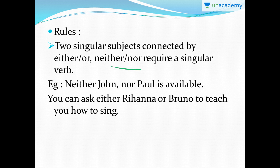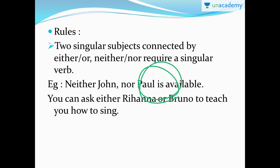For example: 'Neither John nor Paul is available.' So 'neither/nor' is there. John and Paul are two singular subjects — both are singular words. And look at the verb: it is 'is,' which is singular in nature. So when there is 'neither/nor' joining two singular subjects, the verb is always singular.